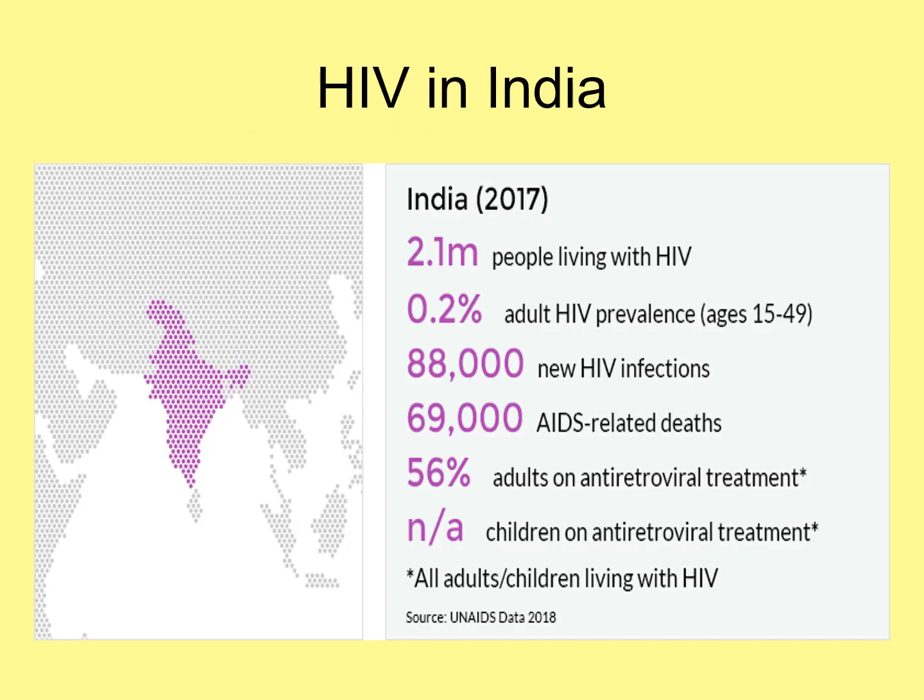In India, this is data from 2017 from WHO: 2.1 million people live with HIV. Prevalence is at 0.2% for ages 15 to 49, with 88,000 new HIV infections for the year, 69,000 AIDS-related deaths, and 56% are on antiretroviral treatment.